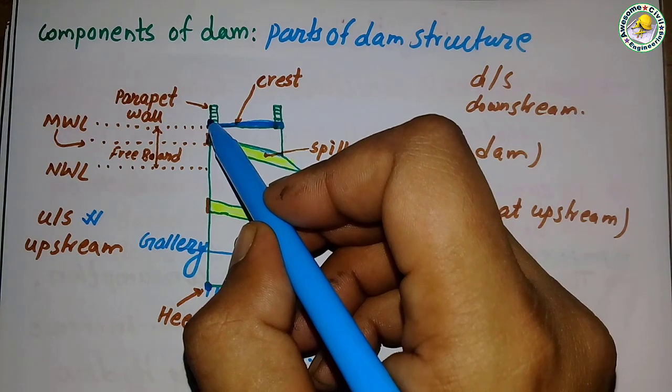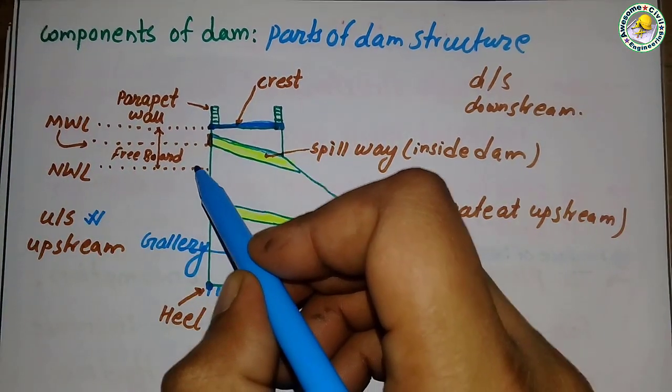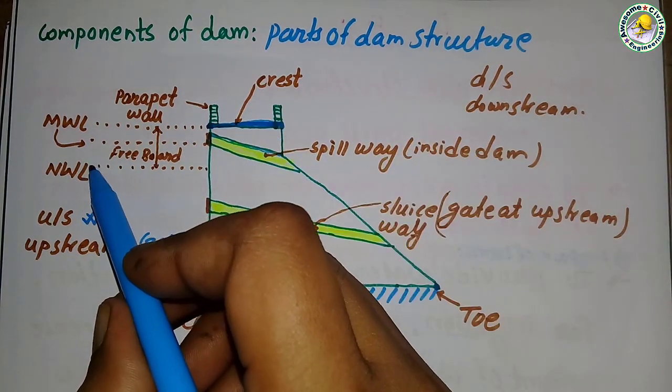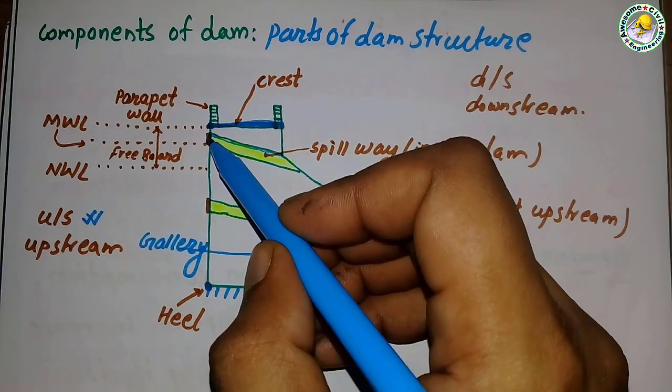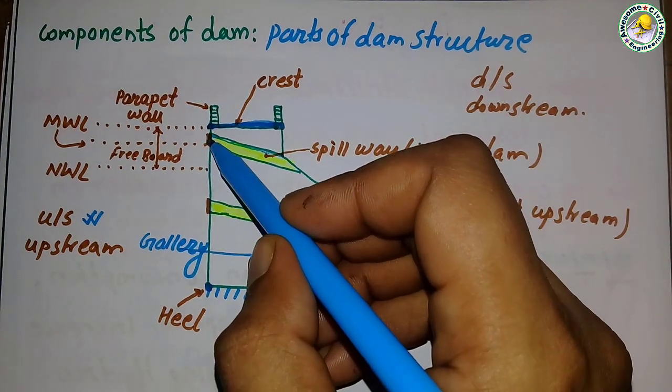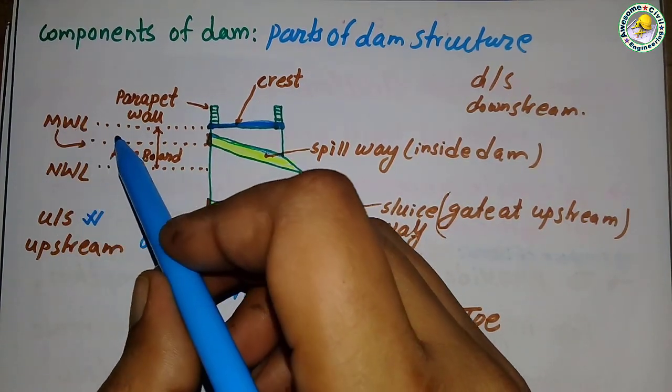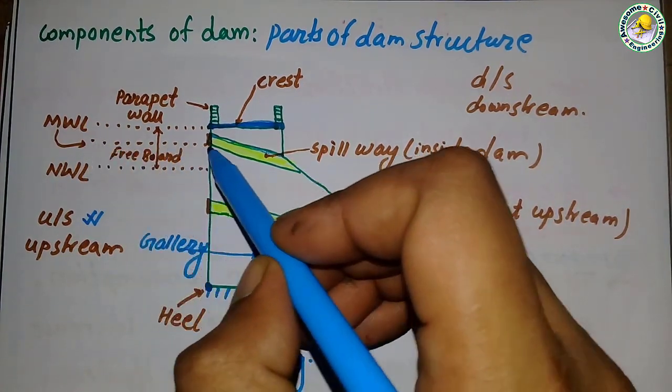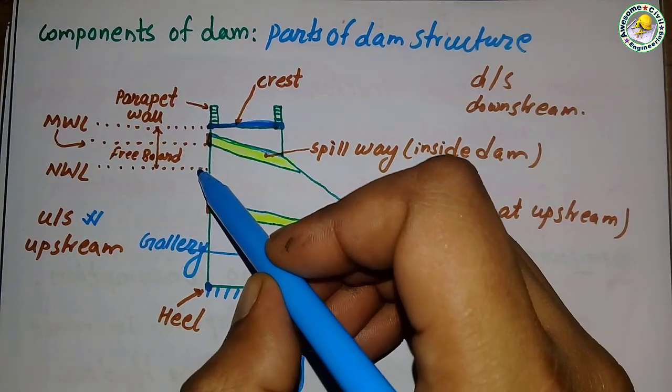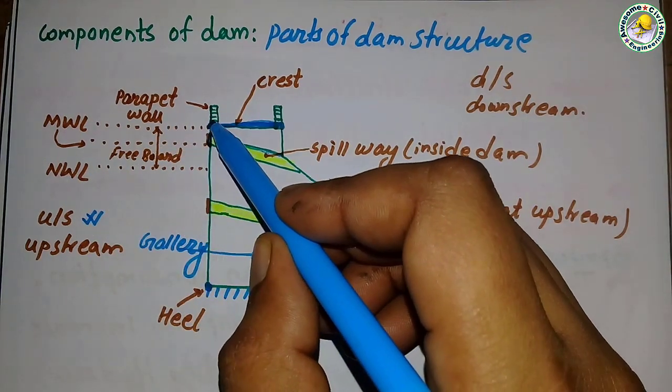From crest level to normal water level, the free board is taken as two to three meters. This is the normal water level, which is one meter to 1.5 meters below the gate of spillway. Maximum water level is at the bottom of the spillway gate.